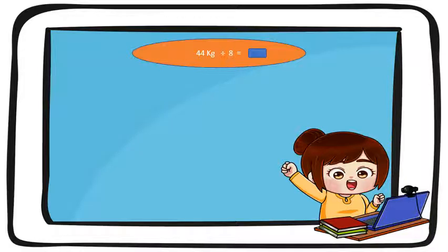Macam mana pula dengan soalan yang kedua? 44 kilogram divide by 8. Sifar 8, 8 kali 5, 40. Yang hampir. So, baki dia empat. Ingat lagi tak yang tadi? Ini adalah kilogram. Belum lagi gram.